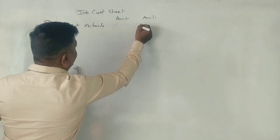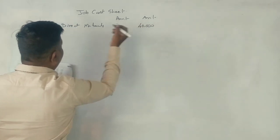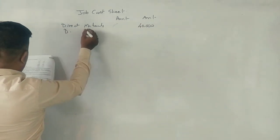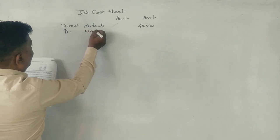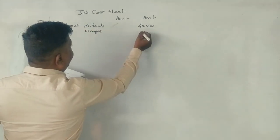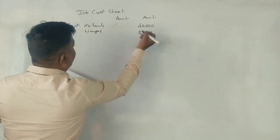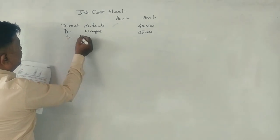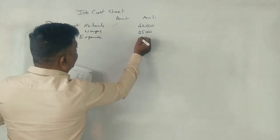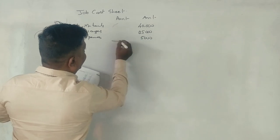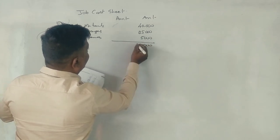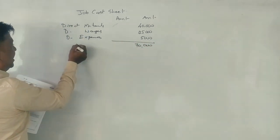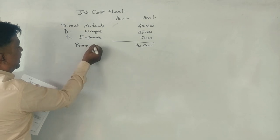40,000. Direct labour, 25,000, that was wages. Direct expenses, 5,000. Total, what is it? 70,000. What is it? Prime cost.